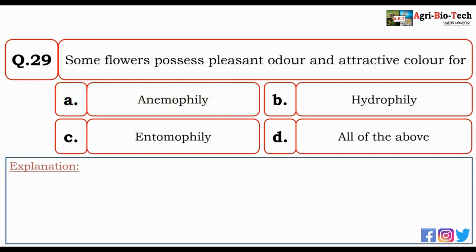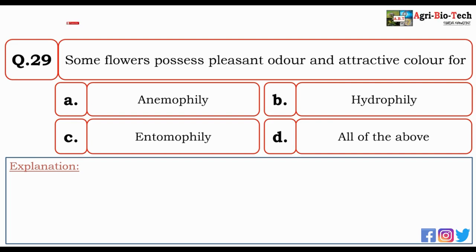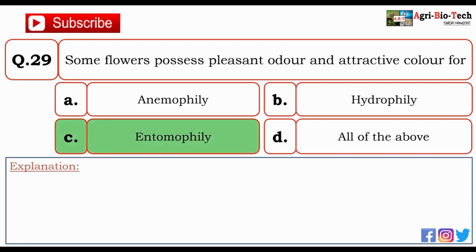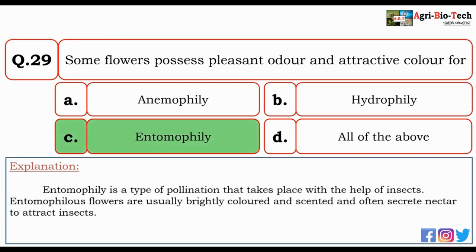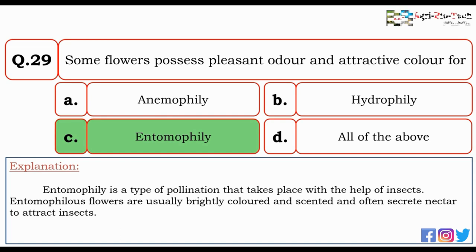Next question: some flowers possess pleasant odour and attractive colour for — anemophily, hydrophily, entomophily, or all of the above? The correct option is C — entomophily. Entomophily is a type of pollination that takes place with the help of insects. Entomophilous flowers are usually brightly coloured and scented, and often secrete nectar to attract insects.